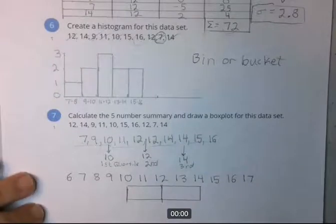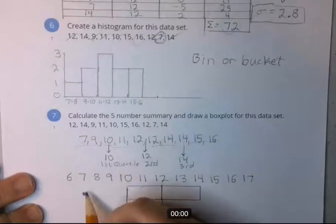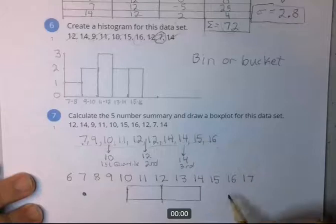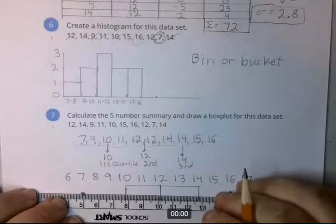Now, what you do is put a dot at your low end of the range of the actual numbers and at the high end. So 7 was at the low end. There it is right there. And 16 is at the high end. And then you draw a line between the box.